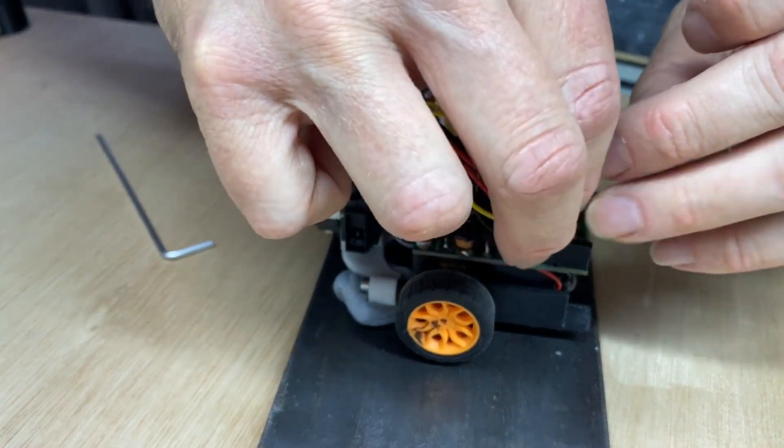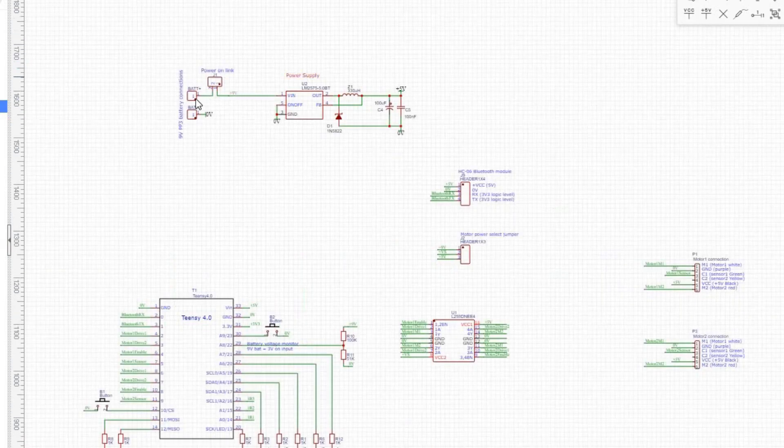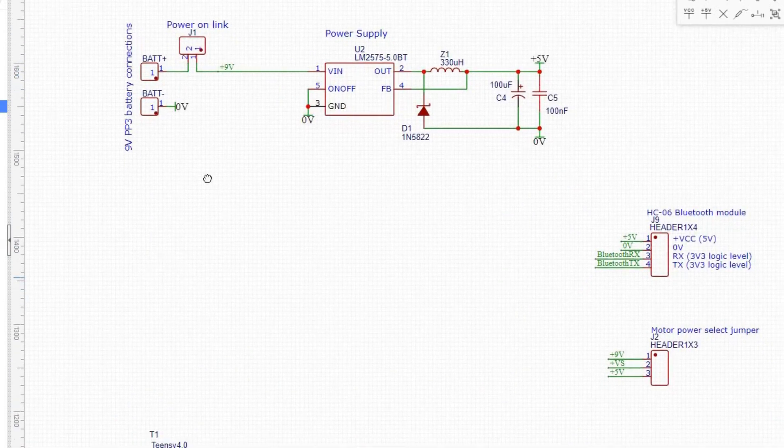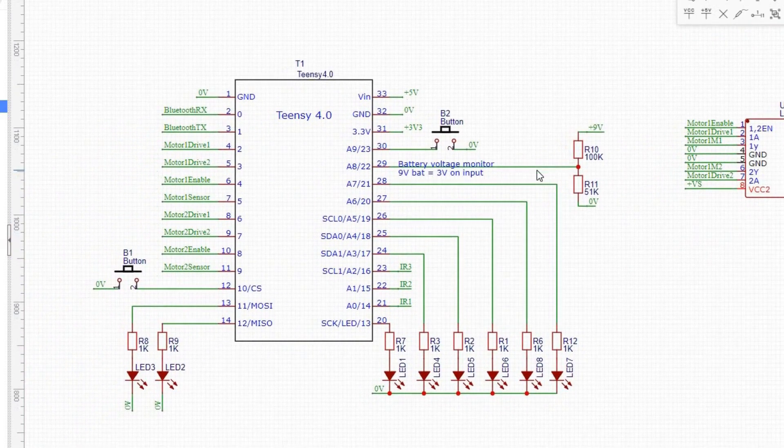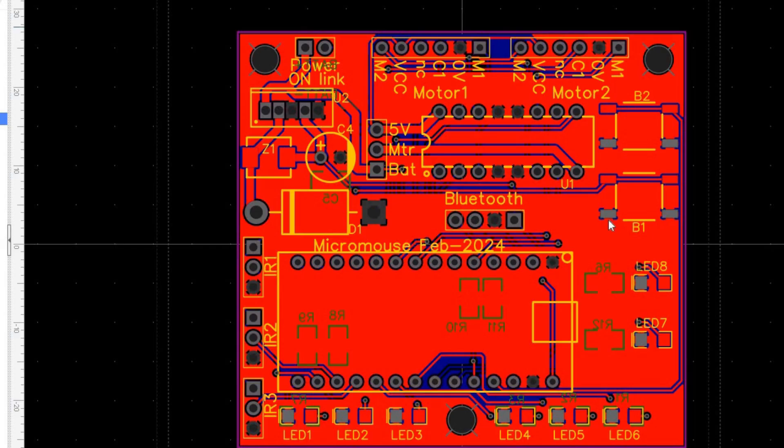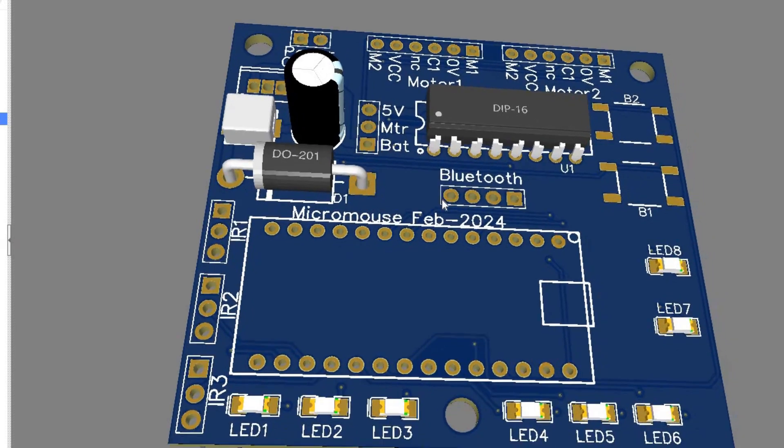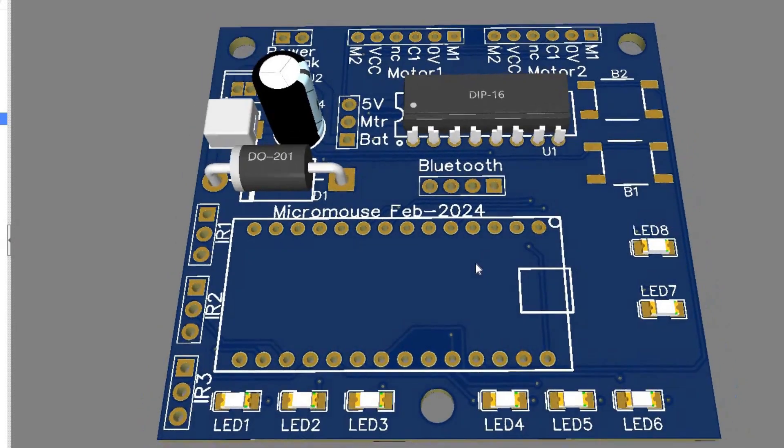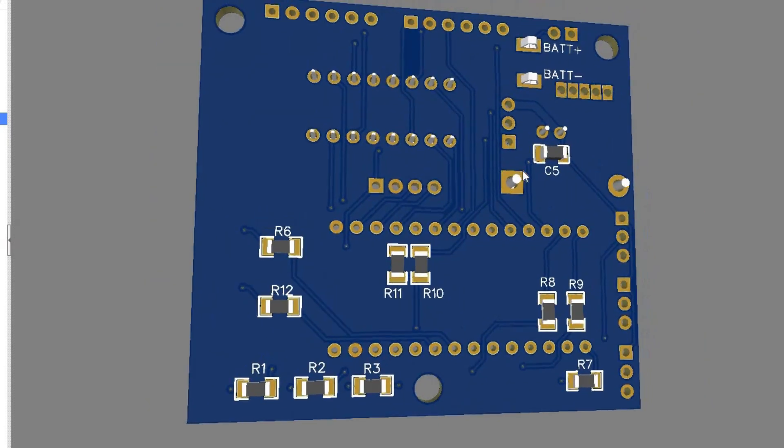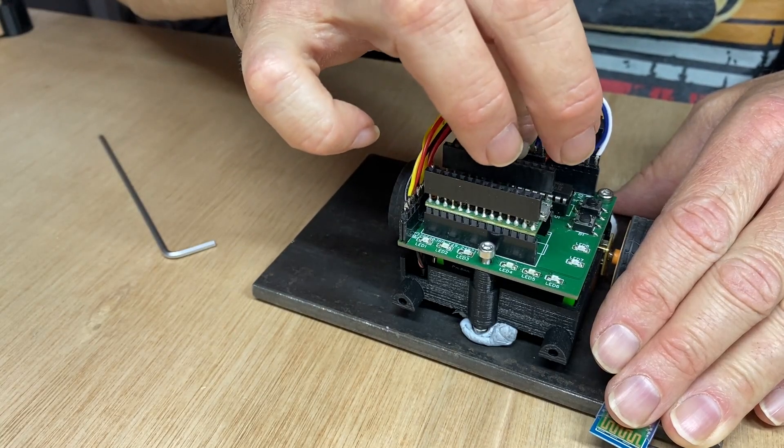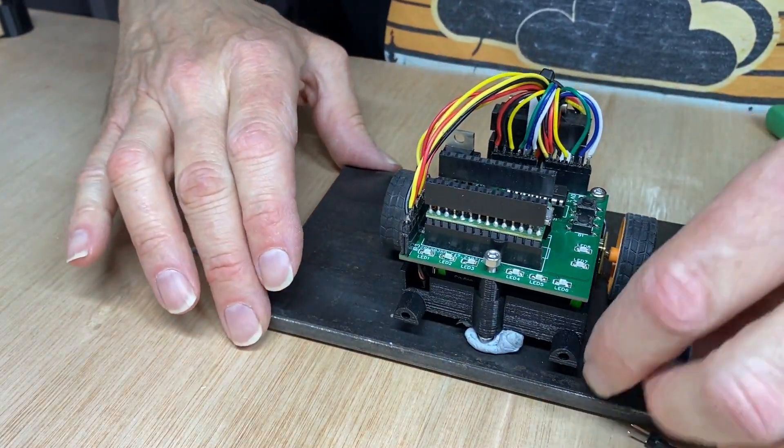I should put the video up of the circuit board as well - that would be a good idea. The circuit board was designed in EasyEDA software, which is brilliant. Before I do the Bluetooth I need to plug in the motors, so the left motor plugs in there and the right motor plugs in there. Right, this is the Bluetooth.